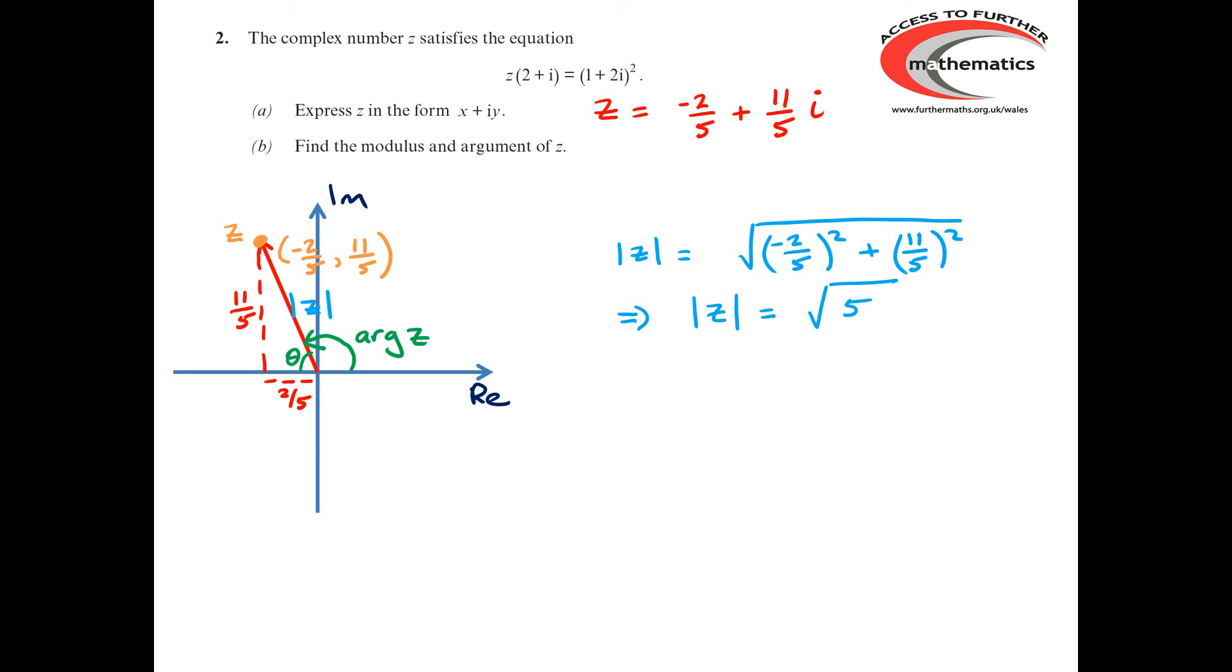So, we can say that tan θ is the opposite divided by the adjacent is 11/5 divided by 2/5. So, that tells me that θ must be 1.39. Remember, arguments are measured in radians. So, we need to be using radians on our calculators at this point.